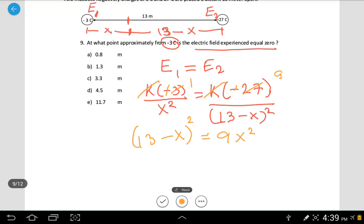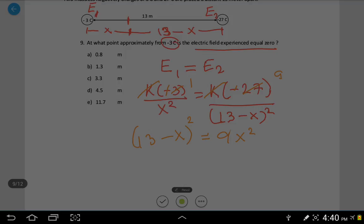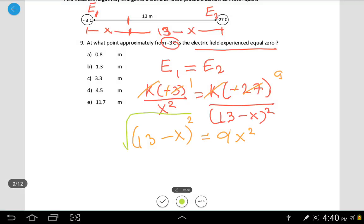We would like to find the value of x. We can take the square root on both sides. So I'm taking the square root on both sides, this side and this side. I'm getting 3x here. I'm getting 13 minus x here. So I'm moving the negative x on the other side. So I'm getting 4x equals 13.